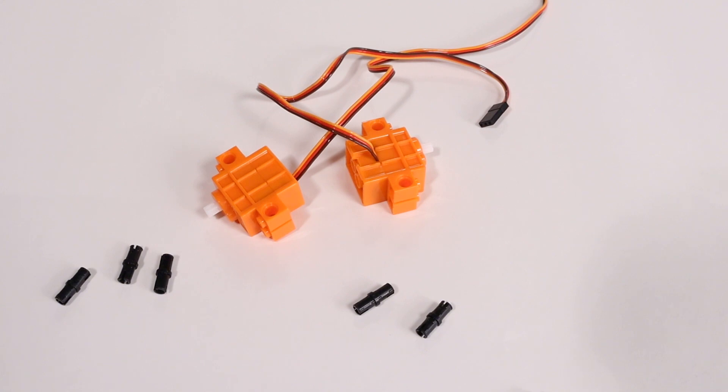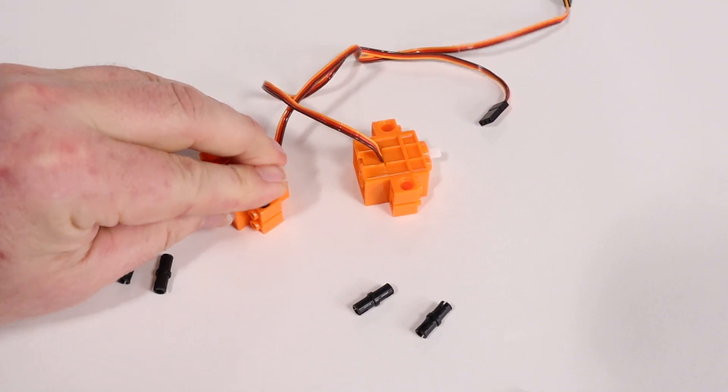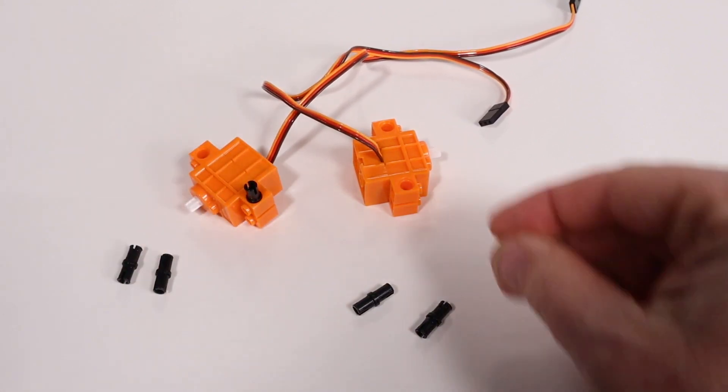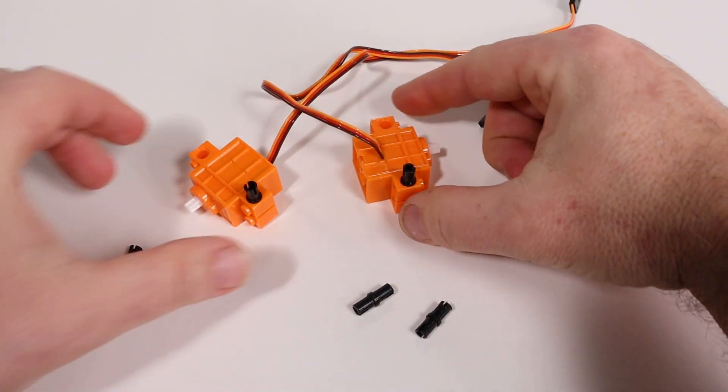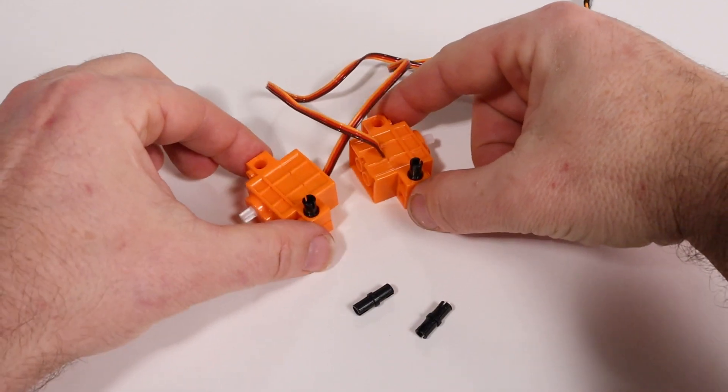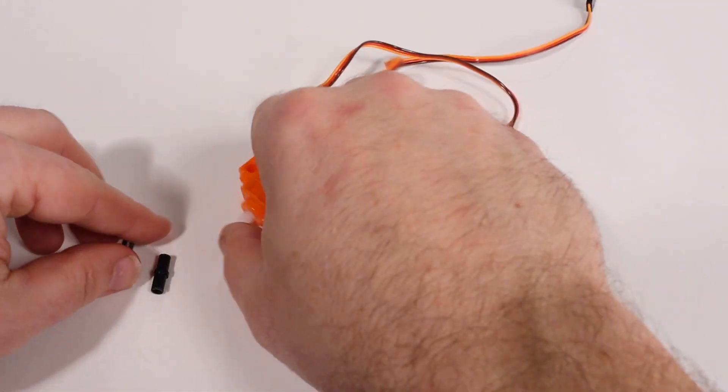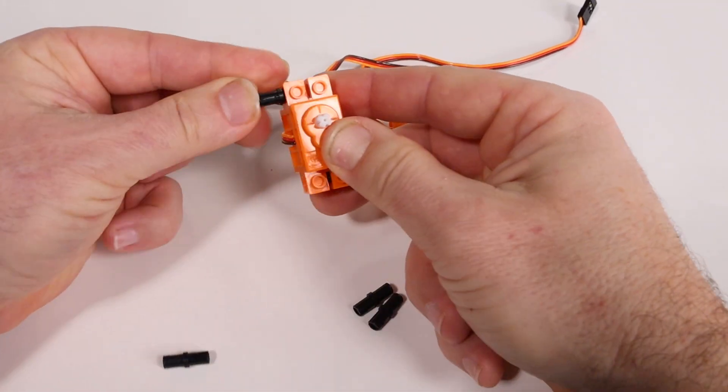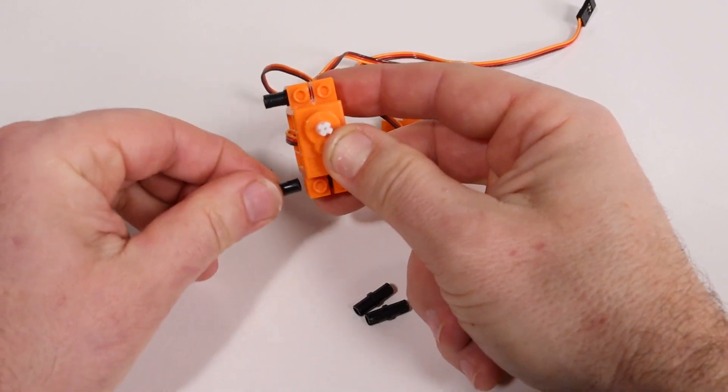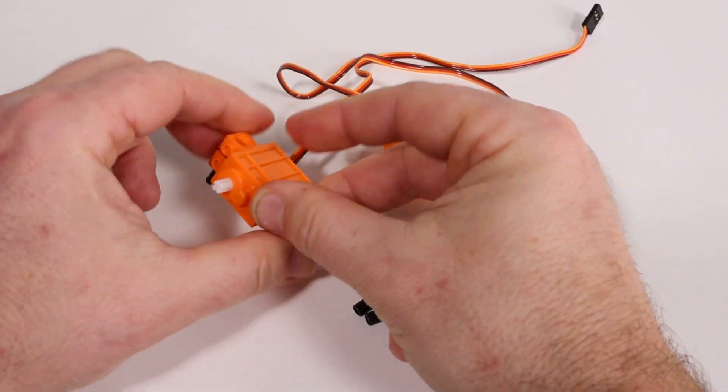It's servo time. Place the servos roughly back to back with the wires on one going down and the wires on the other going up. We're basically going to make mirror images of each other putting a peg in one side on the top of each servo. Then we'll put two of the short black pegs onto the bottom of each of the two servos.